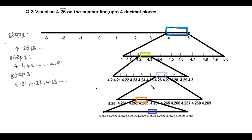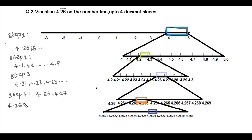The second digit after the decimal point is 6, which indicates we focus between 4.26 and 4.27. In step 4 we divide the region between 4.26 and 4.27 into 10 equal parts: 4.261, 4.262, and so on up to 4.269.